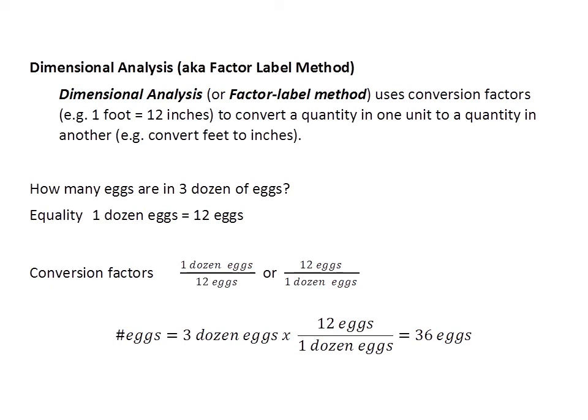So let's look at a very simple dimensional analysis problem that you can do in your head quickly. How many eggs are in 3 dozen of eggs? Well, the equality that we know is that 1 dozen of eggs is equal to 12 eggs.